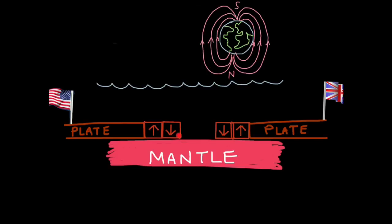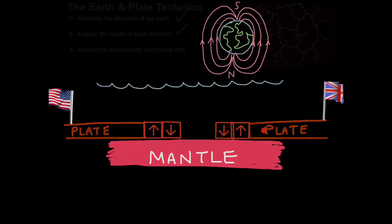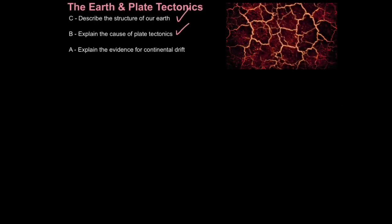This magnetic striping is strong evidence that the continents are moving further away from each other, and that continental drift is, in fact, true. So now you can explain the evidence for continental drift.